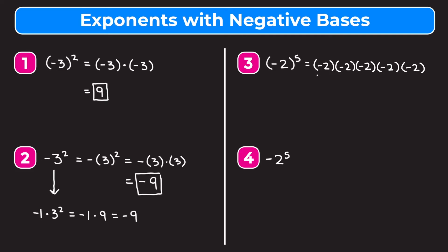I'm going to multiply negative 2 and negative 2 first, which gives me a positive 4. I'm also going to multiply the next negative 2 and negative 2, which gives me another positive 4, and then I have this negative 2 left over. Now I'll multiply these two fours together: 4 times 4 is 16, and finally 16 times negative 2 gives me negative 32. So when I raise negative 2 that entire quantity to the fifth I get negative 32.